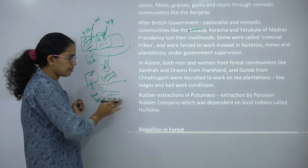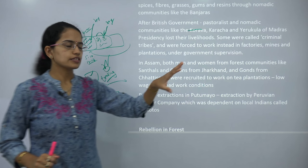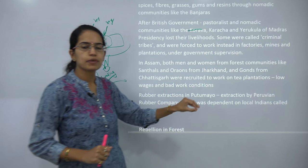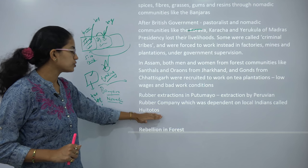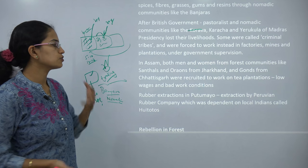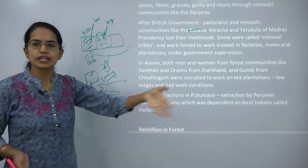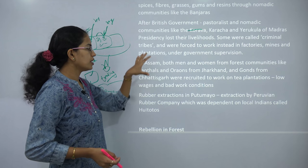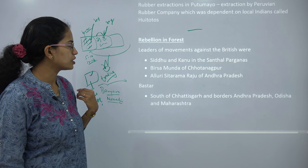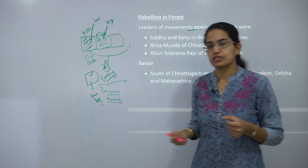In Assam, you had men and women working in forest communities. You had the Santhals and Oraons of Jharkhand, and the Gonds of Chhattisgarh, who were recruited to plantation fields from local areas. They were given very meager wages and had to live in very poor conditions. As a result, rebellion among the people originated.